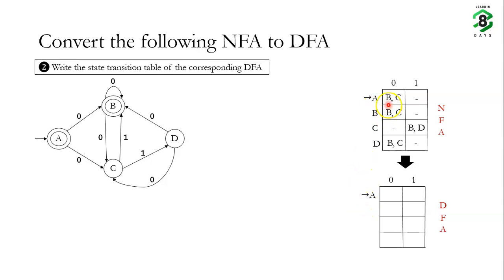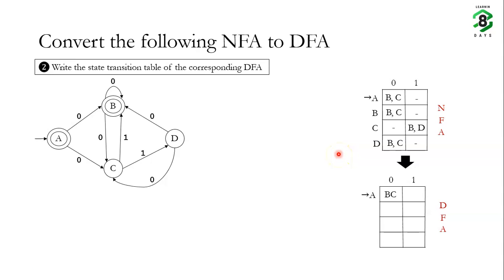On state A with input 0, the NFA transitions to either state B or state C, so the DFA transitions to a new combined state which we call BC. On input 1, the NFA had no transition from state A, so for the DFA we introduce a trap state which we call phi. The trap state is a state from which the machine cannot exit, so once we reach phi we remain there.